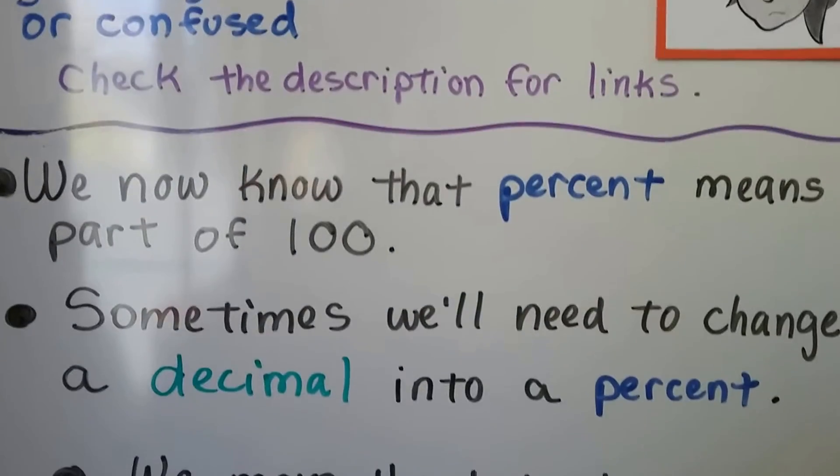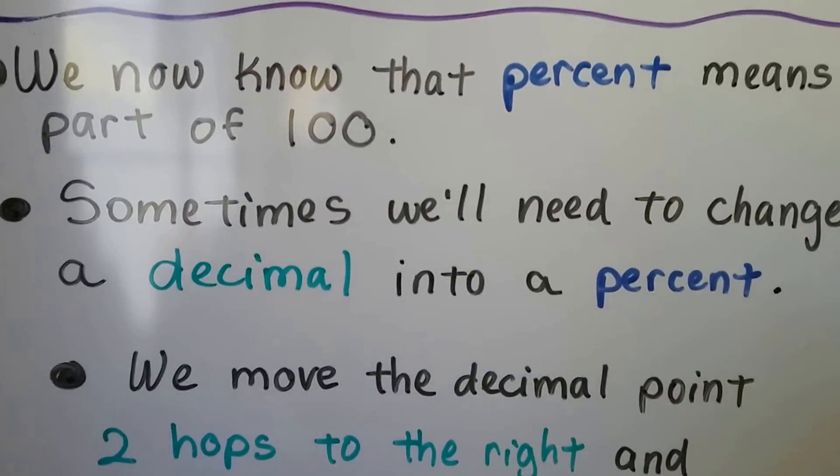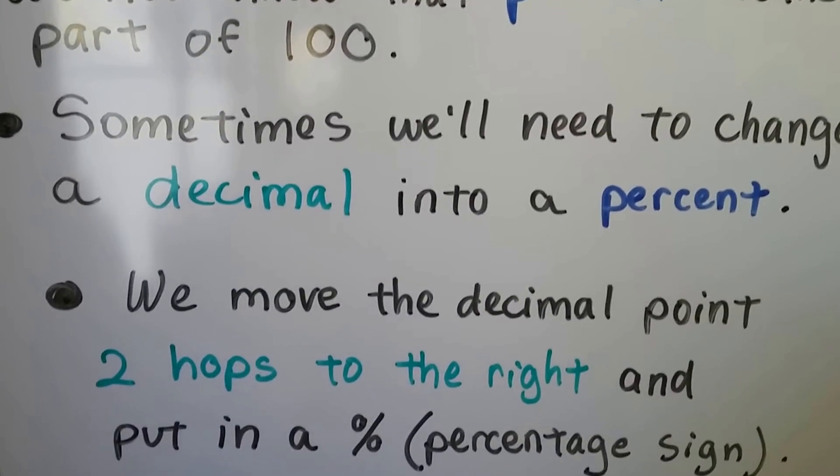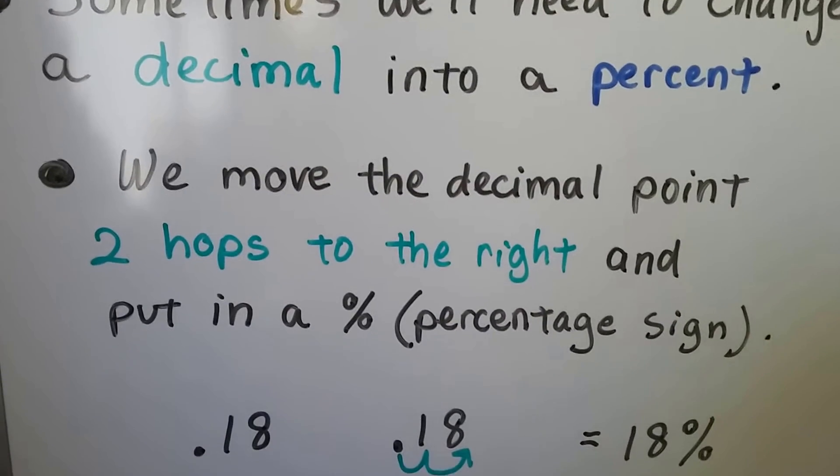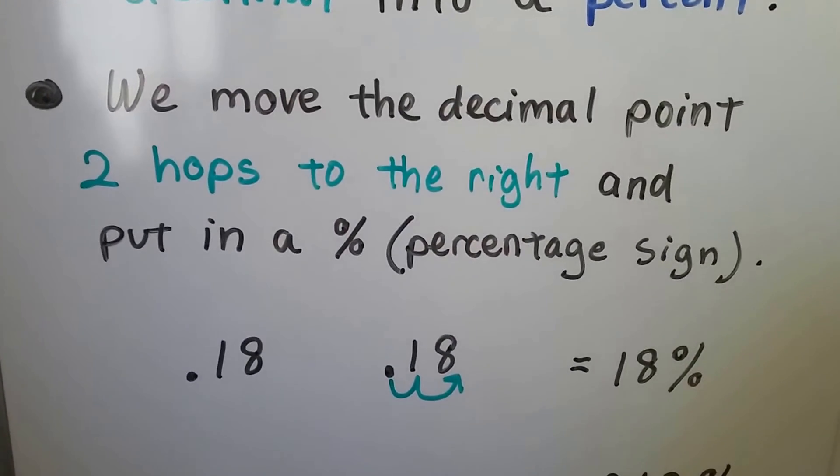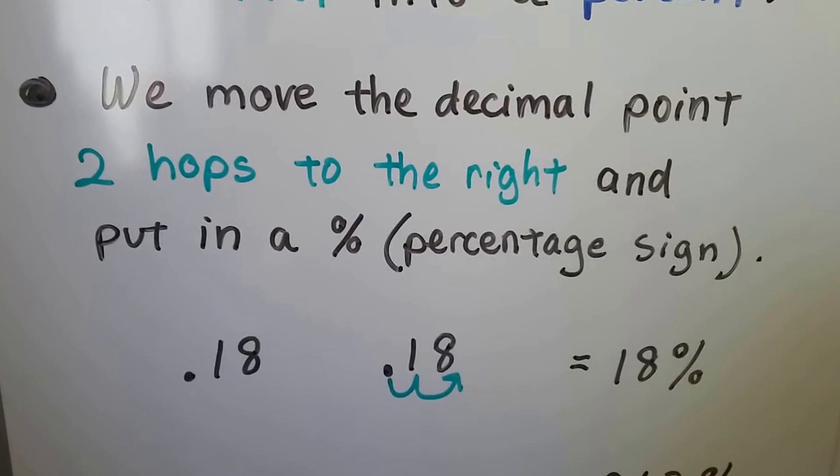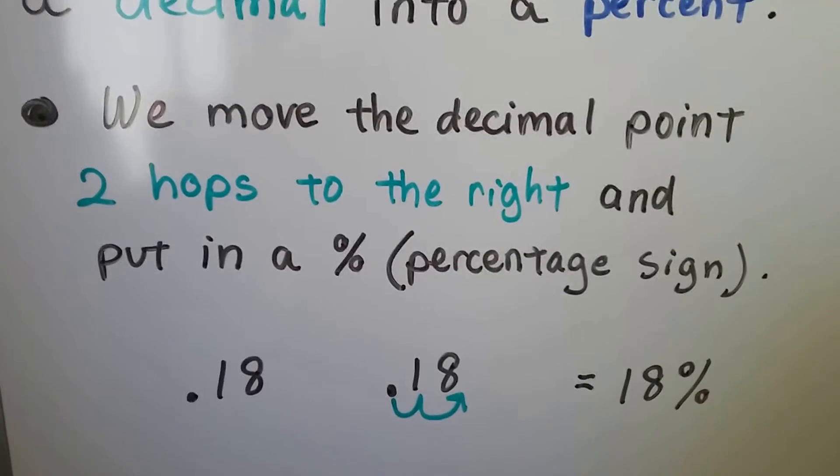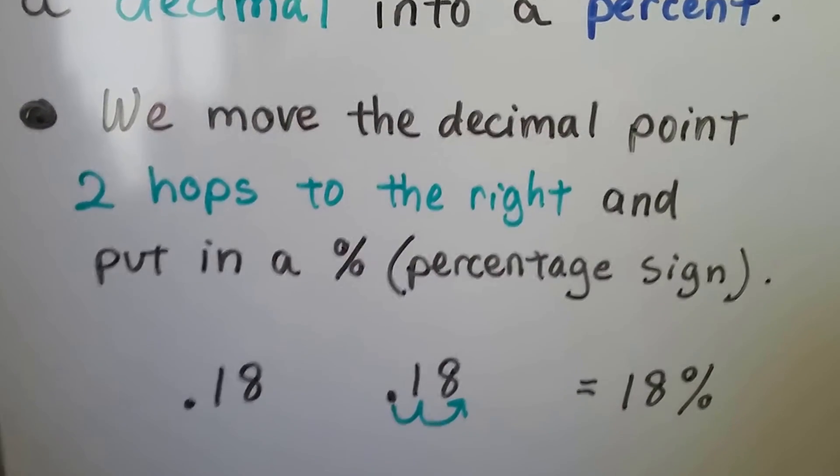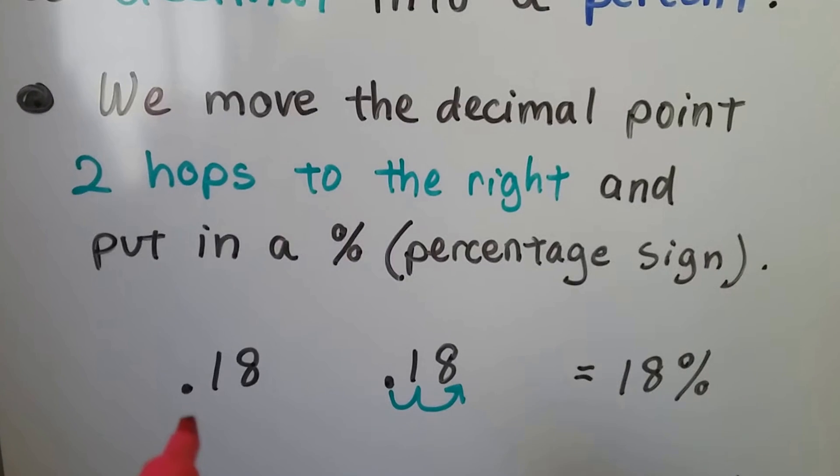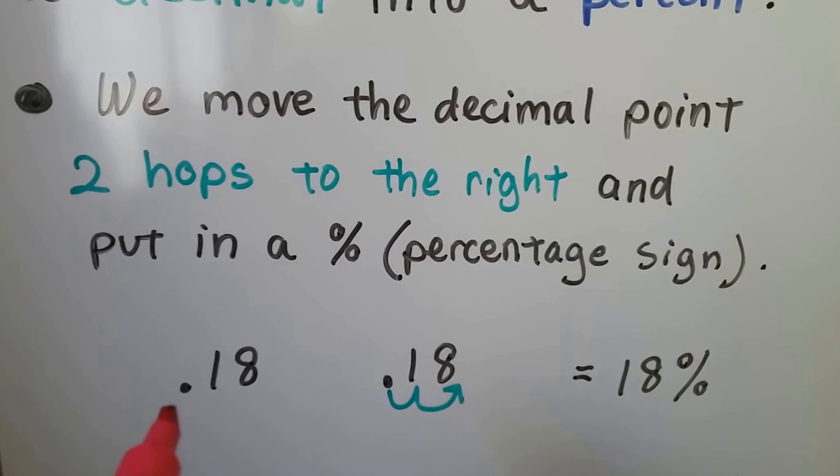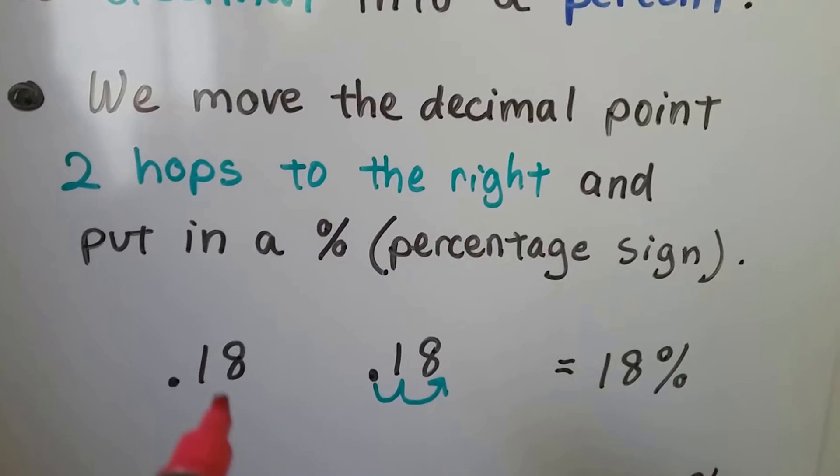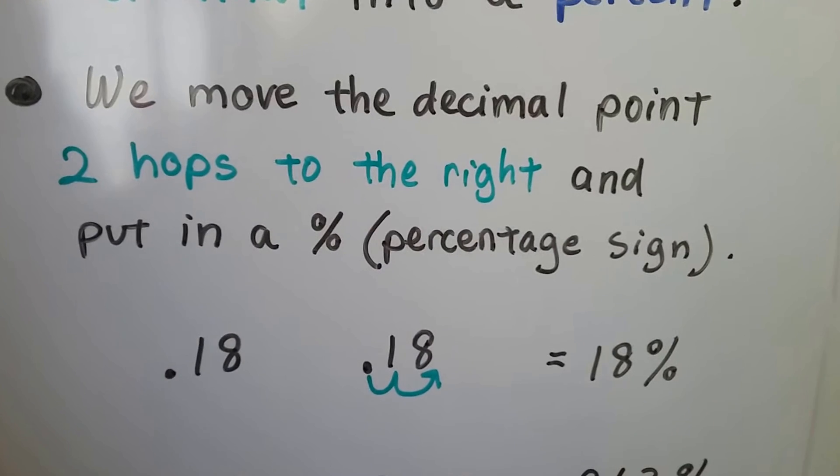So we know that percent means part of 100, and sometimes we'll need to change a decimal into a percent. We move the decimal point two hops to the right and put in a percentage sign. When we were doing it the other way, going from a percent to a decimal, we moved two hops to the left and got rid of the percentage sign. Now we're going to go two hops to the right and add a percentage sign.